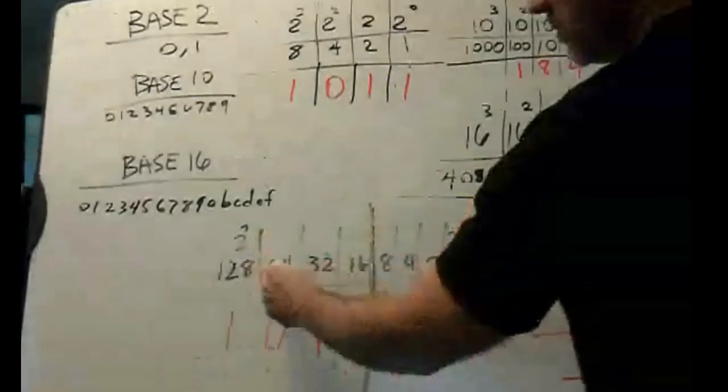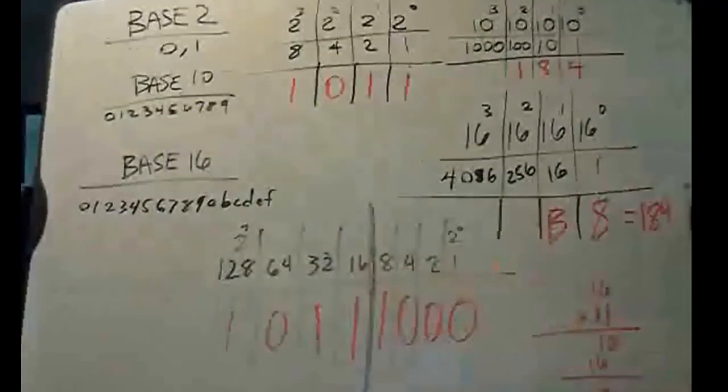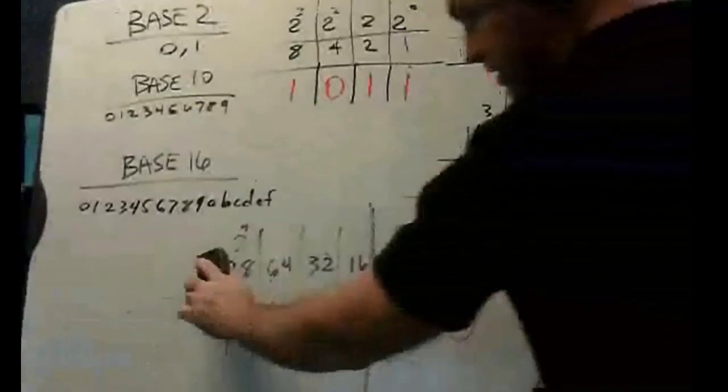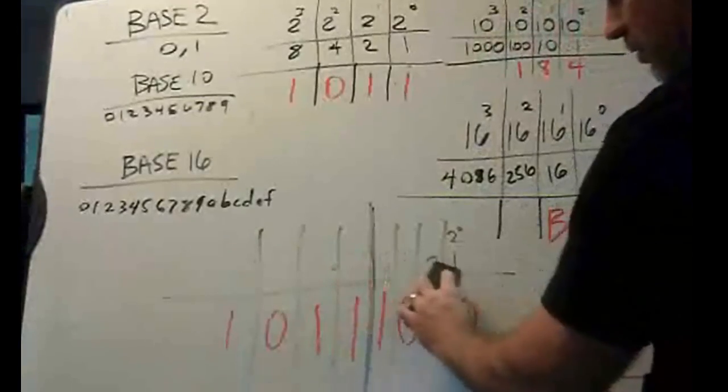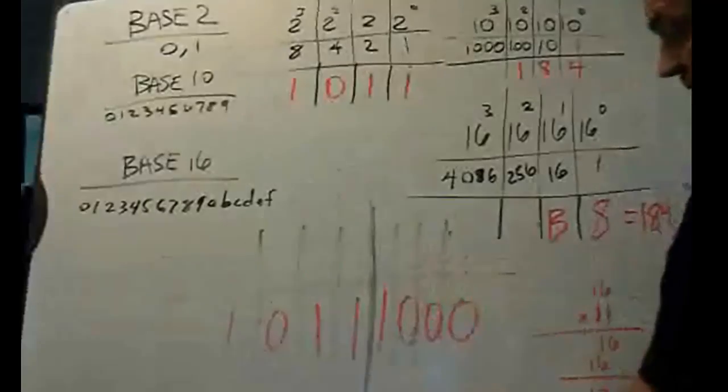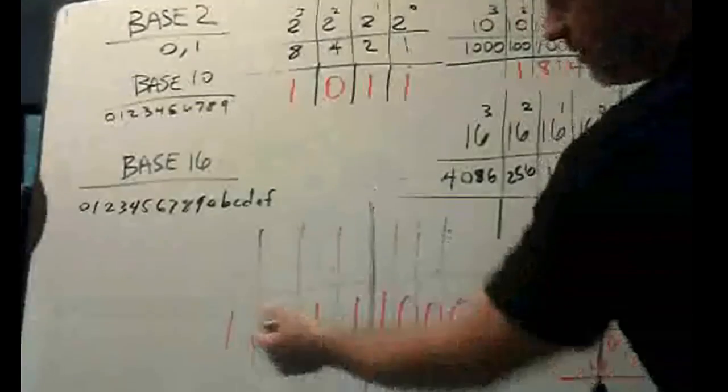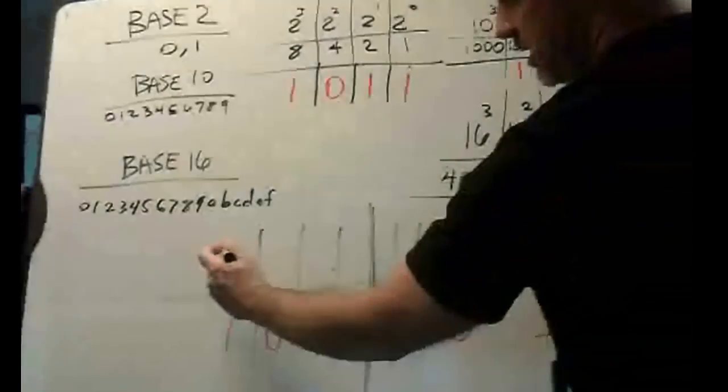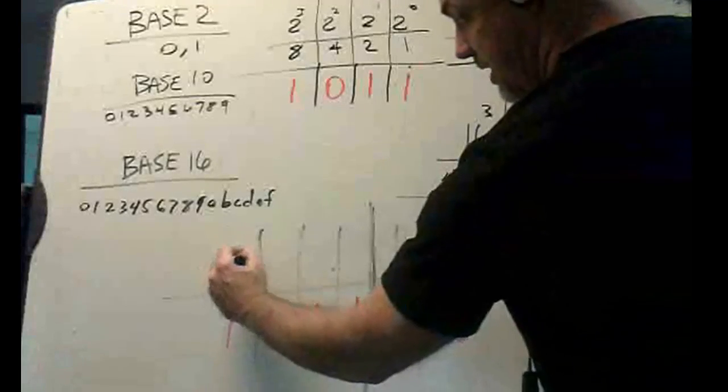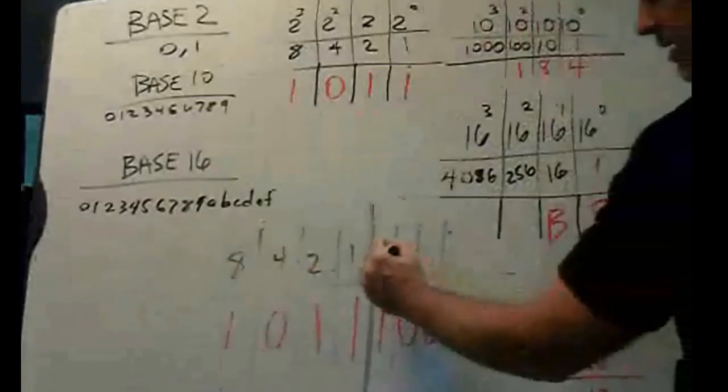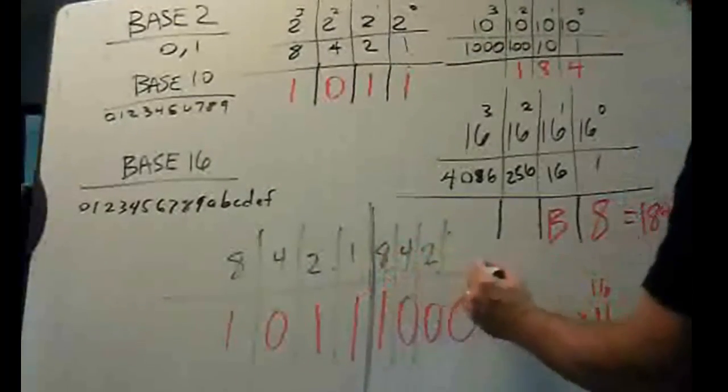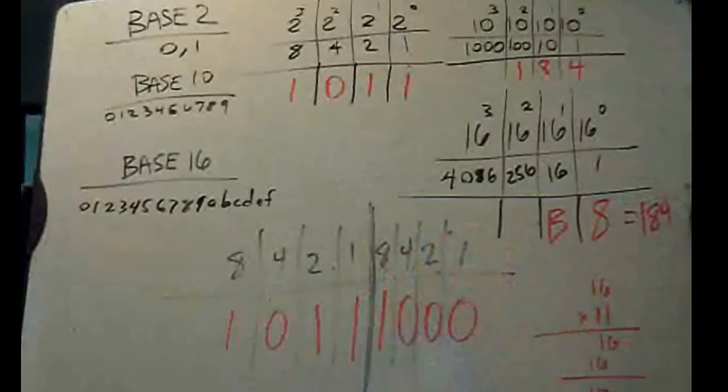So, we take these 8 bits and divide them in half into 4 bits. We can treat each 4 bits separately. So, instead of being the 128th place, the 64th place, the 32, 16, treat each 4 bits, even though we have 8 bits total, just treat them as 4 bits each. So, in other words, this would be the 8's place, the 4's place, the 2's place, and the 1's place, and this would be the 8's place, the 4's place, the 2's place, and the 1's place.